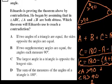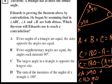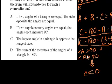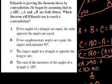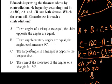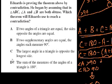That is the contradiction. Therefore, you cannot have two angles that are more than 90 degrees — two obtuse angles — in a triangle. That would be your proof by contradiction. Looking at the choices, the theorem Eduardo used is: the sum of the measures of the angles of a triangle is 180. So the answer is choice D.